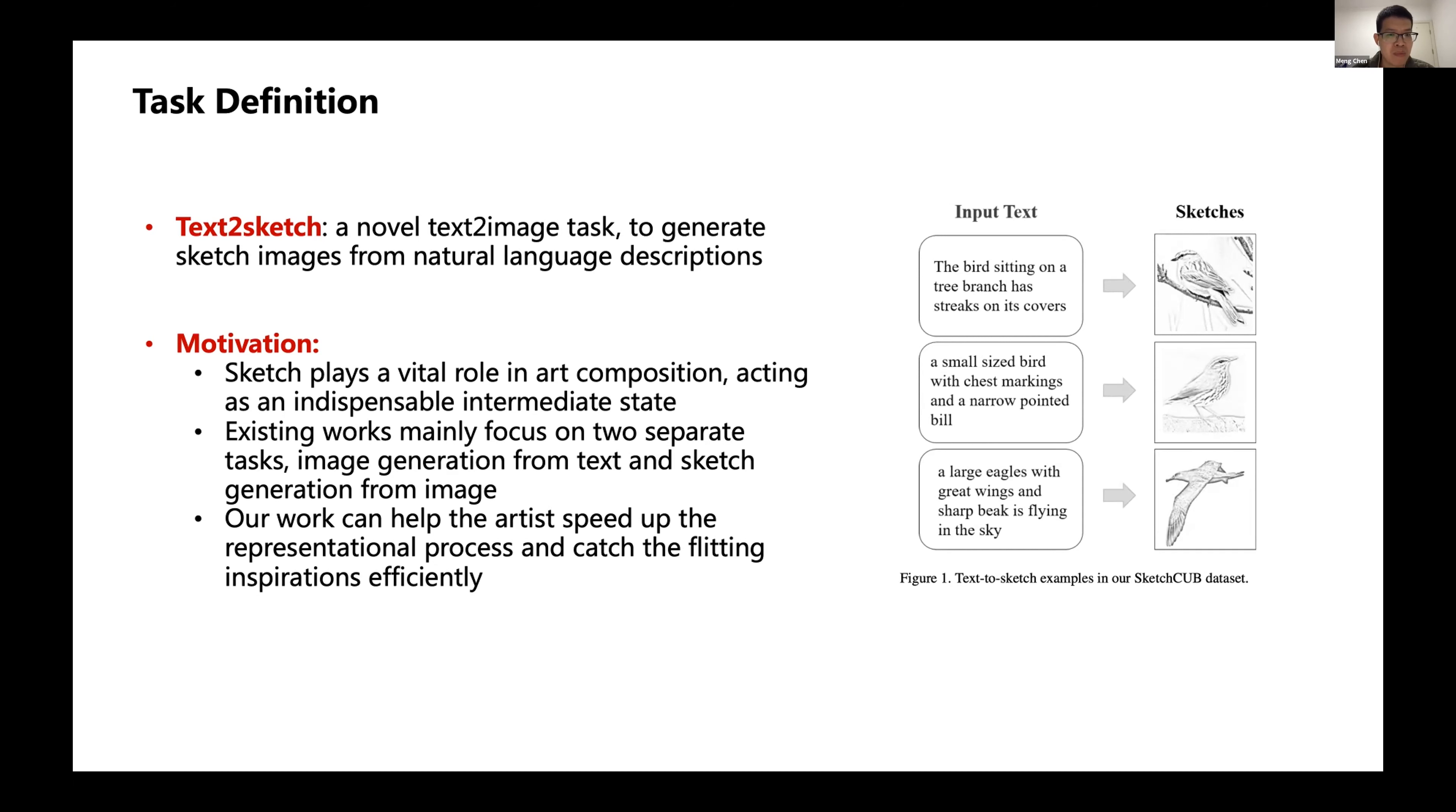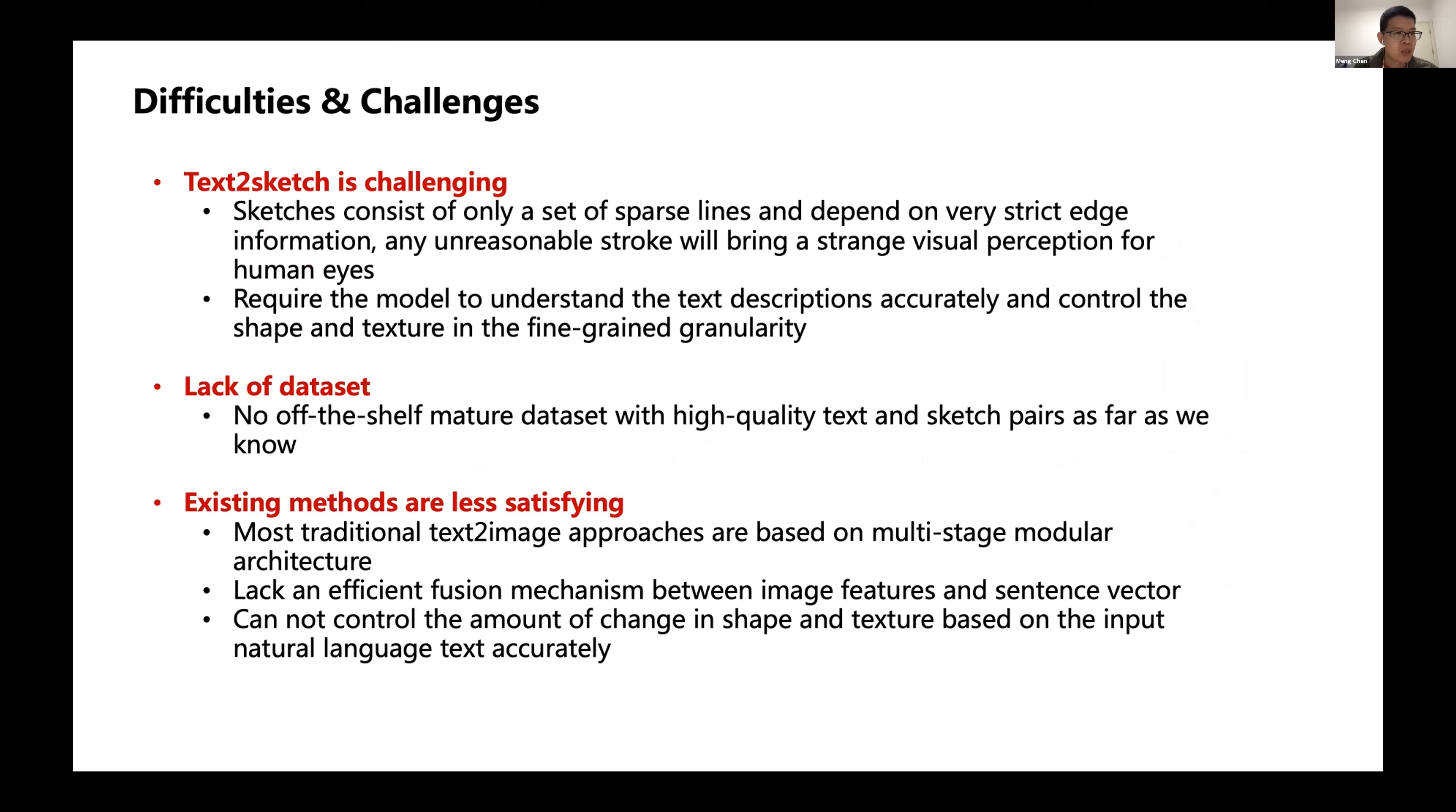Why do we want to do this? Our motivations are as follows. First, we think sketch plays a very important role in art composition, acting as a principle intermediate state. However, currently most works mainly focus on two separate tasks: image generation from text and sketch generation from image. We think, why not generate sketch from text directly? Our work can help artists speed up the representational process and catch fleeting inspirations efficiently.